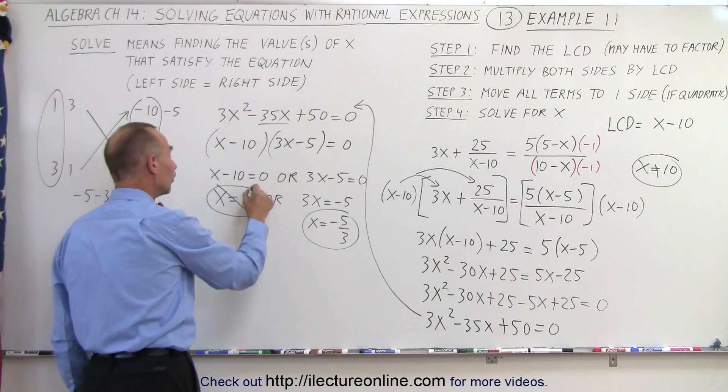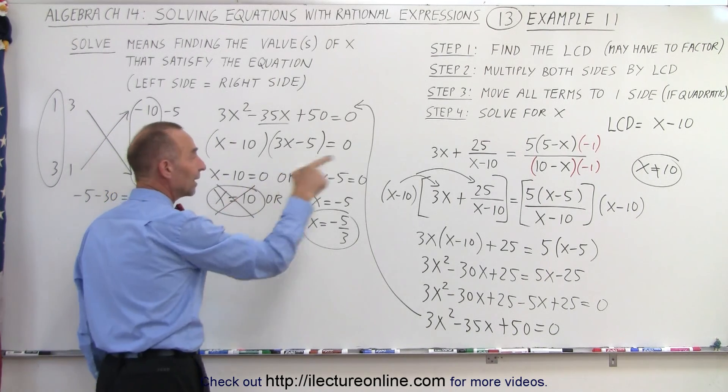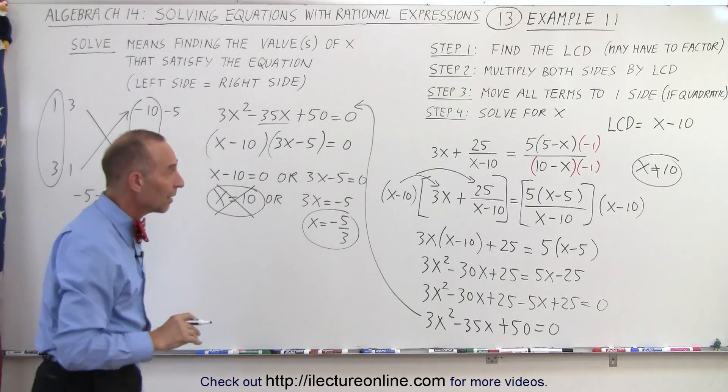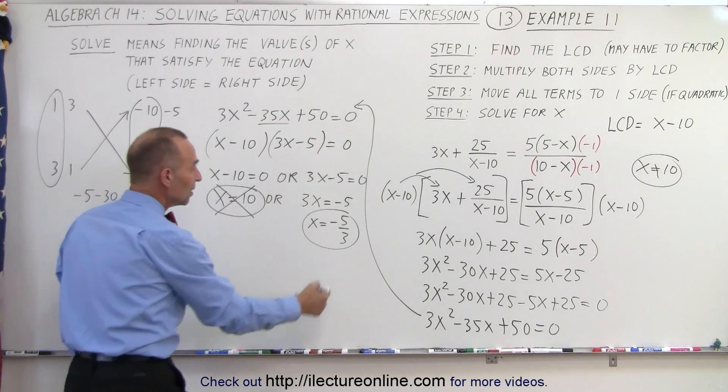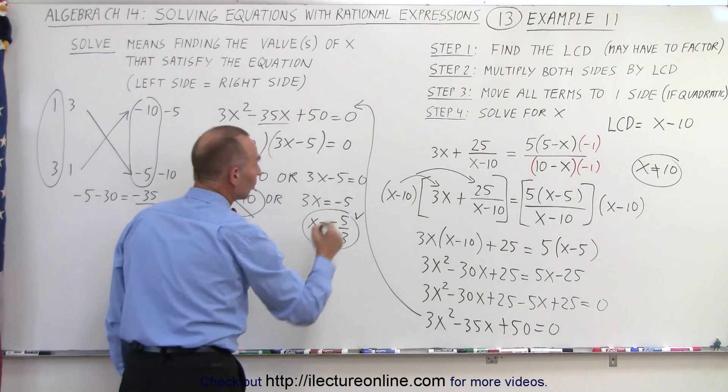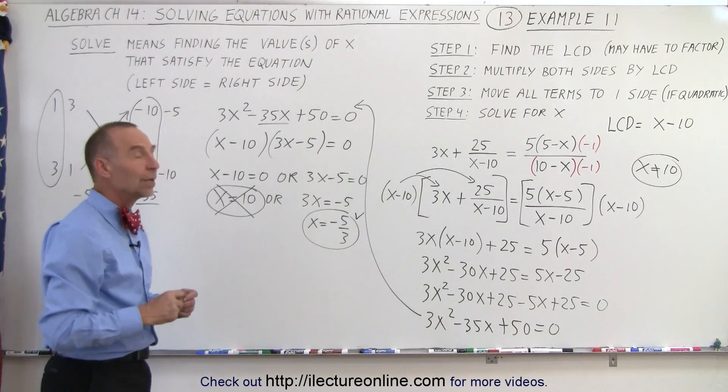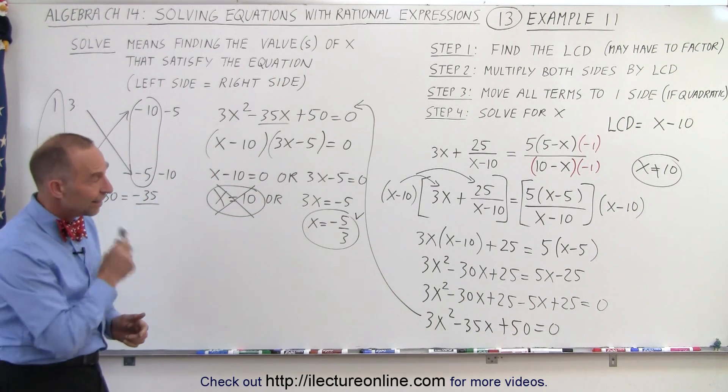we know that x cannot equal 10 because that will make our denominator 0, which happens to be one of our possible solutions. So this is not a valid solution because it violates the rule of not being allowed to have a zero denominator, which means that this is the only solution that we can accept. And that is how it's done.